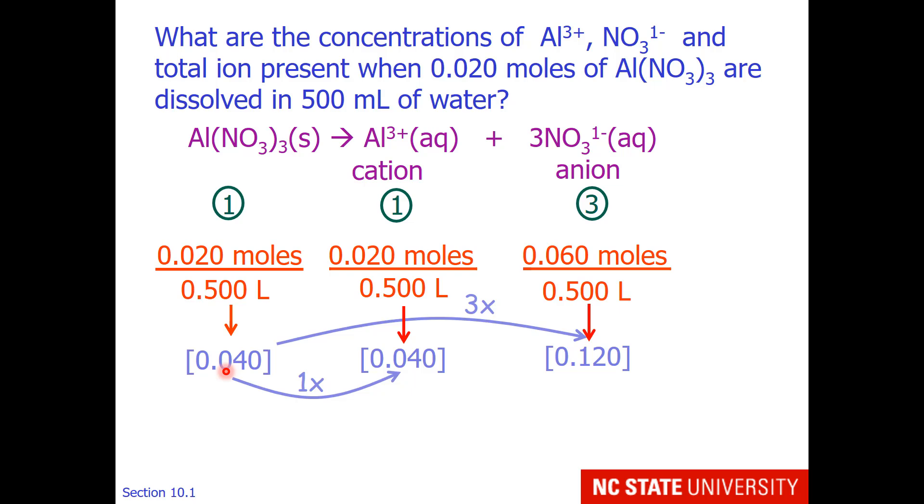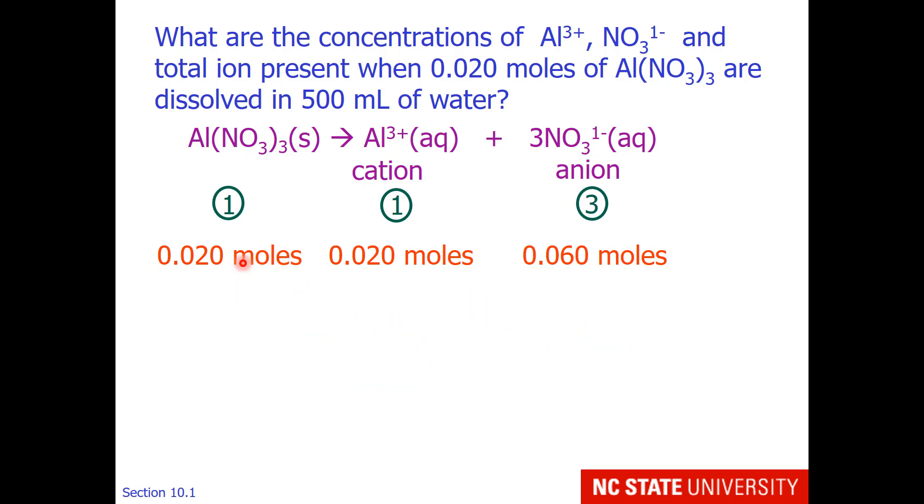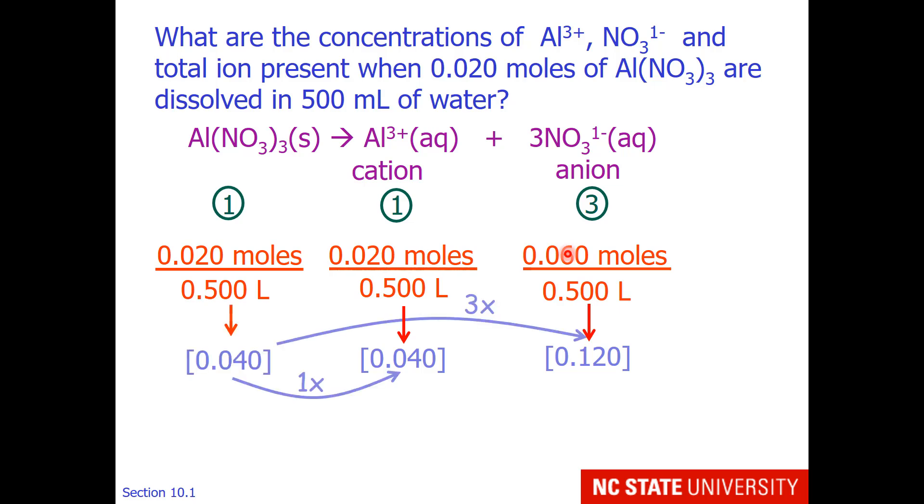The stoichiometry is 1 to 1 to 3. So I know that my aluminum concentration will be the same and my nitrate concentration will be 3 times that value. I feel like that's one less mathematical operation. This method requires 3 calculations. If we go the other route, we have 4 operations. I really feel like it's easier to get the non-broken apart concentration and then multiply.